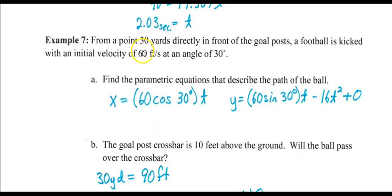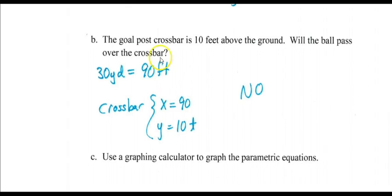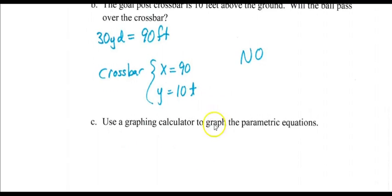Our last example is example 7. From a point 30 yards directly in front of the goal post, a football is kicked with initial velocity of 60 feet per second at an angle of 30 degrees. The first thing we're going to do is write those parametric equations. 60 is in feet per second, so that's nice. Cosine 30 degrees. If the guy is kicking off, the football starts on the ground, so that initial height is zero. Part B says the goal post crossbar is 10 feet above the ground, will the ball pass over the crossbar? 30 yards is 90 feet, so our equation would be x is 90 feet and y equals 10t.